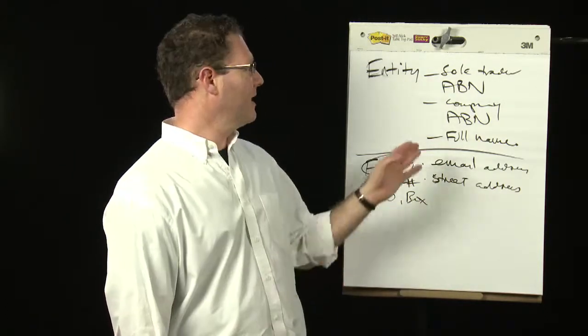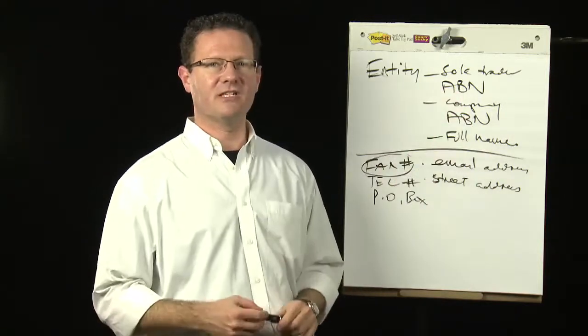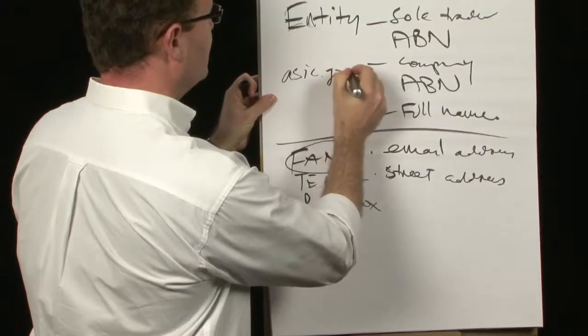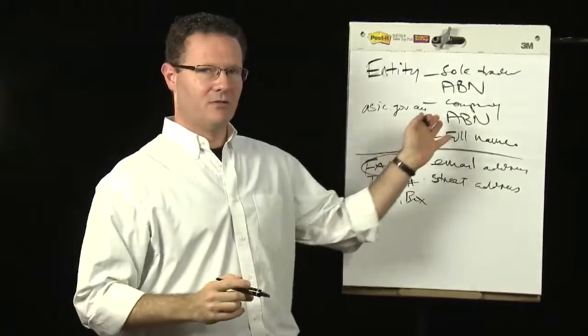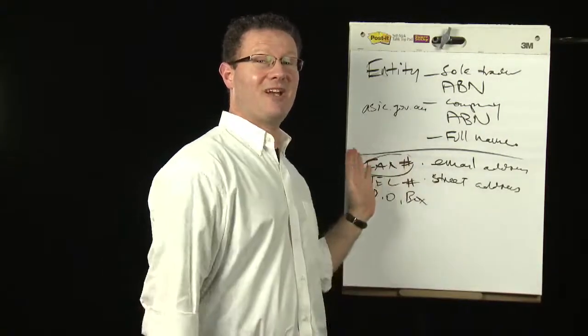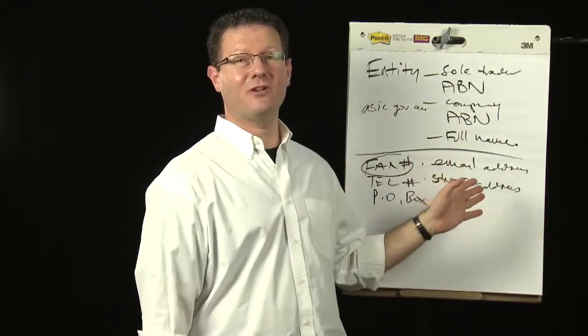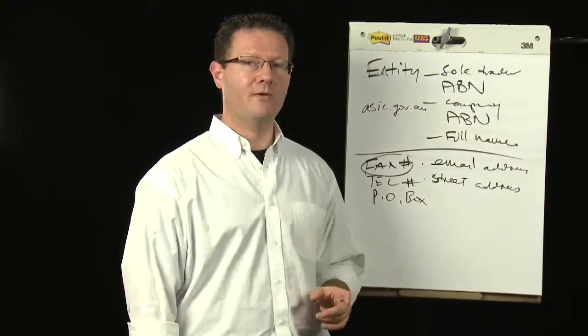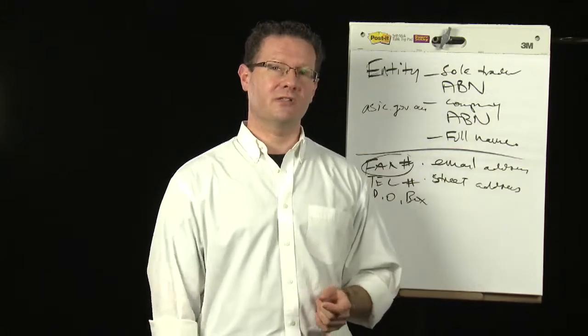If you have an ABN, you go to the ASIC website, asic.gov.au, look up that company, see what the story is with them. You can get a company ASIC extract for $32 or $33. See where is the principal place of business for that business, that ABN, where is their usual place of business, what address is it.